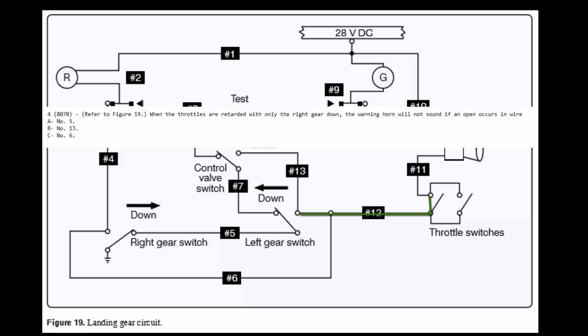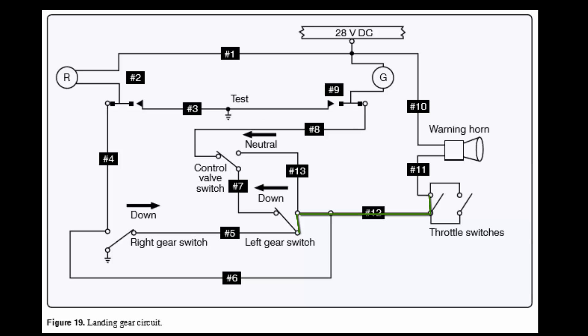When the throttles are retarded with only the right gear down, the warning horn will not sound if an open occurs in what wire? They give us wire 5, wire 13, or wire 6. So once again, power is already provided to the warning horn. If we go through wire 11 and through the switches, it takes us to wire 12.